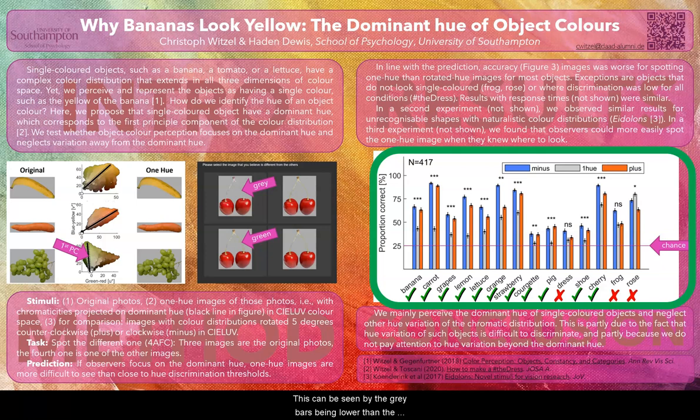These results show that for many objects the hue variation away from the dominant hue is negligible. This is partly because the small hue variation in such objects is barely visible and partly because observers focus on the dominant hue. The results from the second experiment with the unrecognizable shapes also suggest that familiarity with objects barely contributes to the focus on dominant hue.